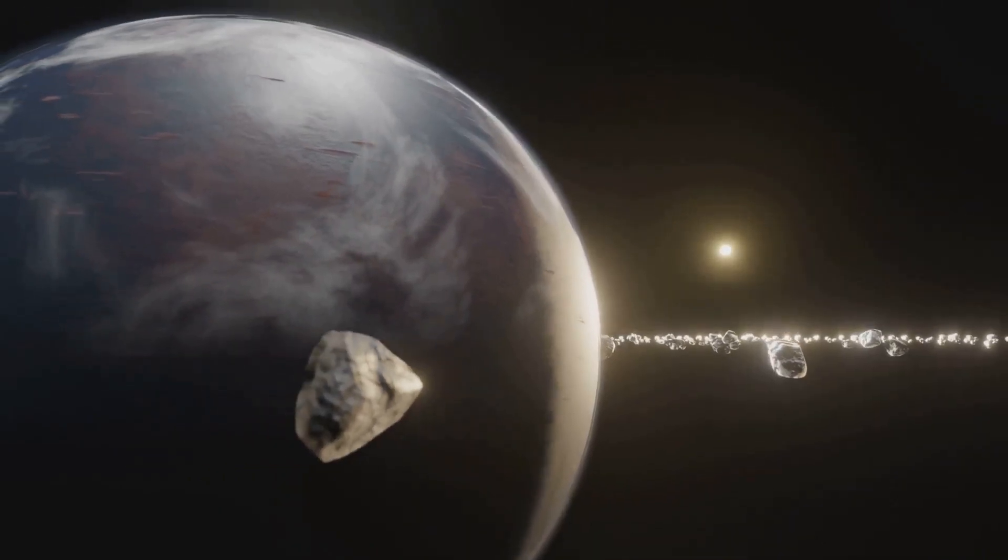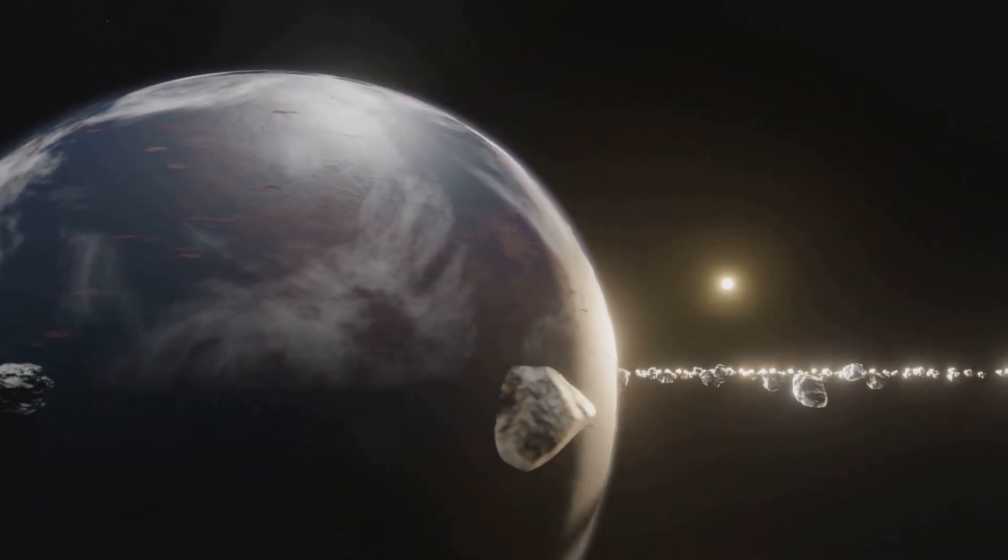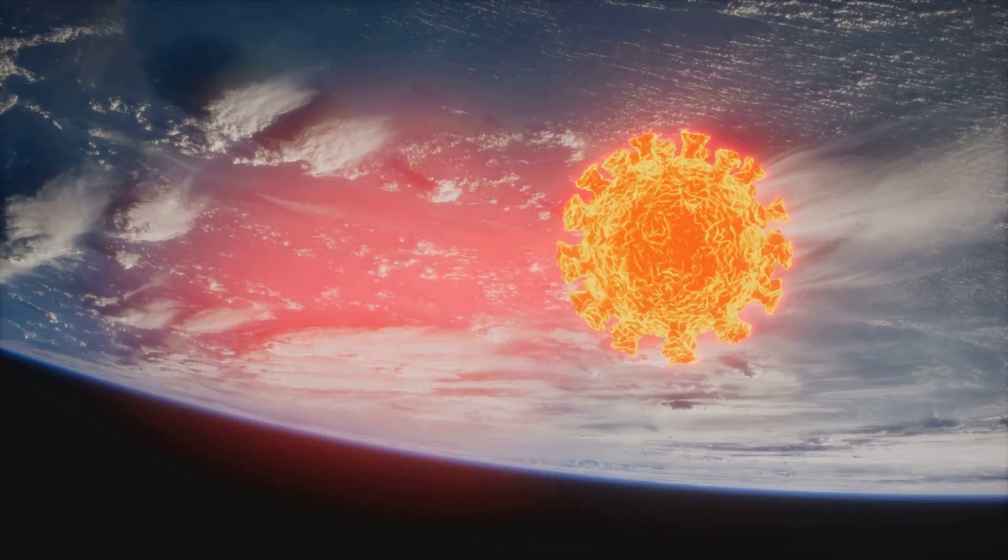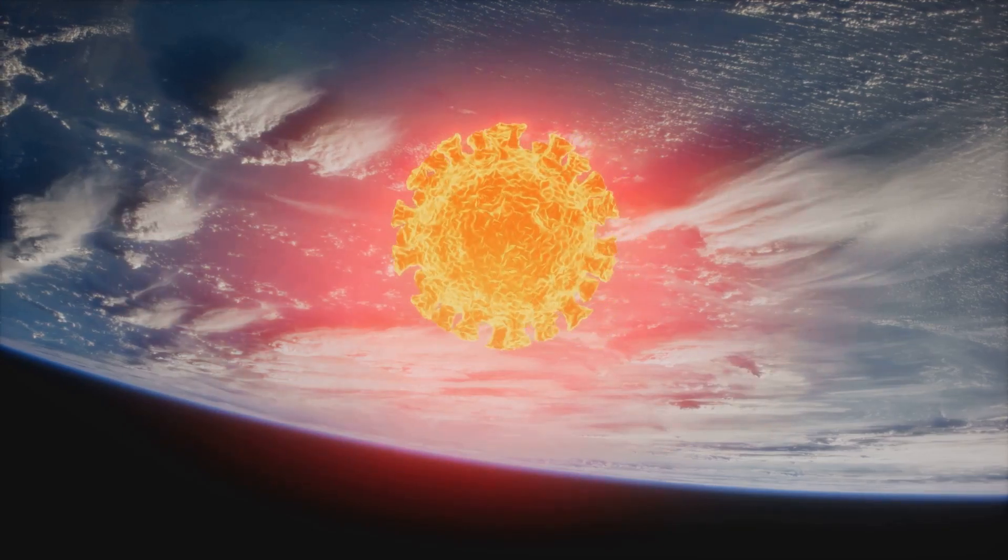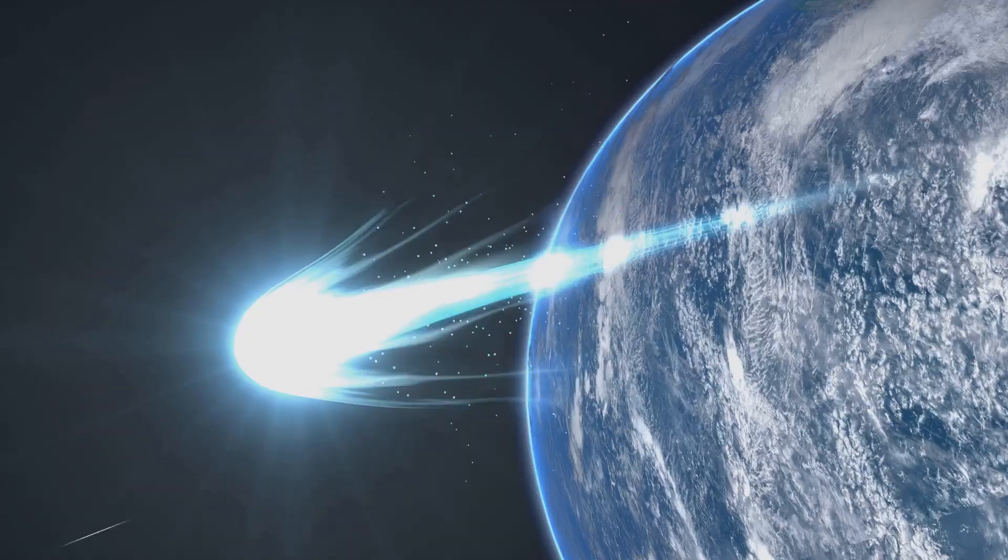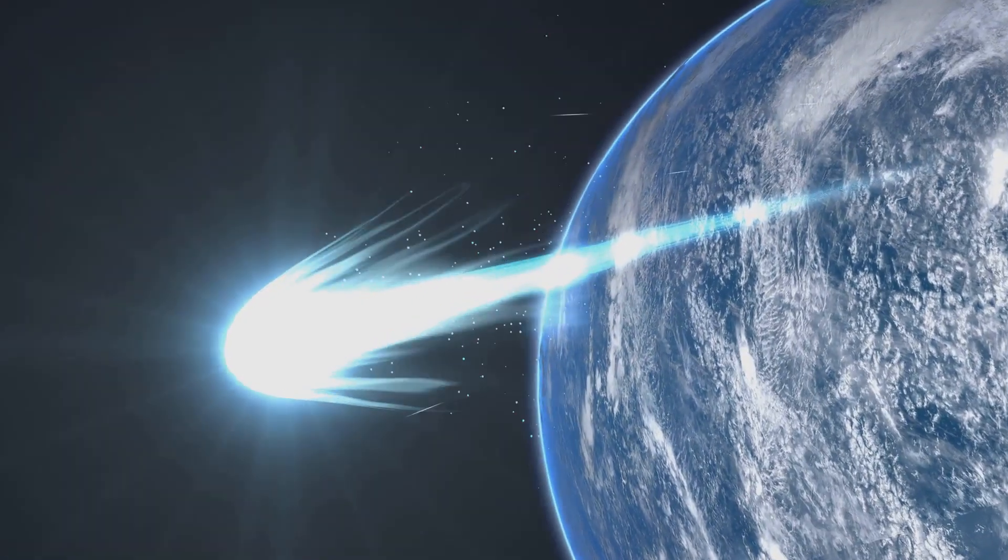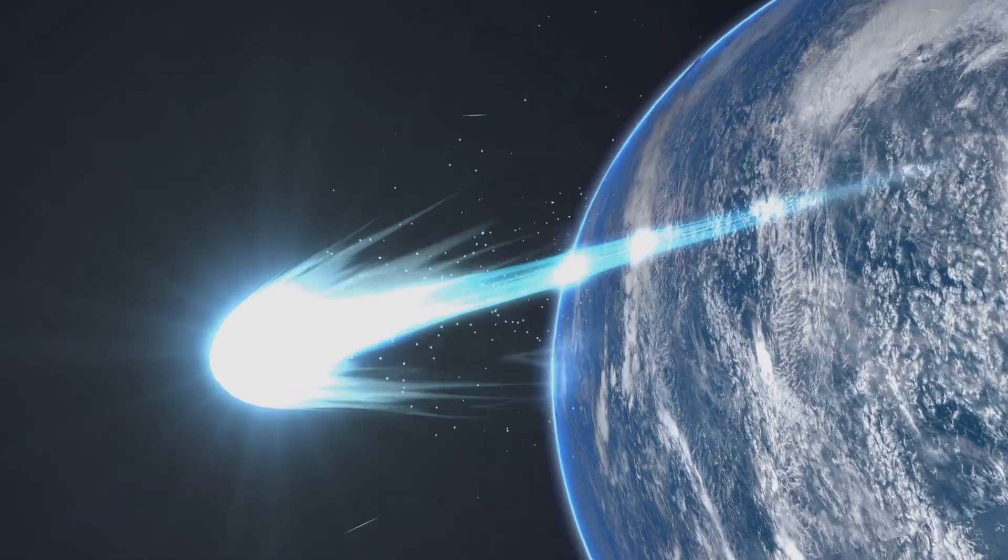Asteroids and comets, remnants from the solar system's formation, rained down on Earth. These impacts delivered more heat and contributed to the volatile mix of the early atmosphere. However, these celestial wanderers also brought something crucial for life: water.